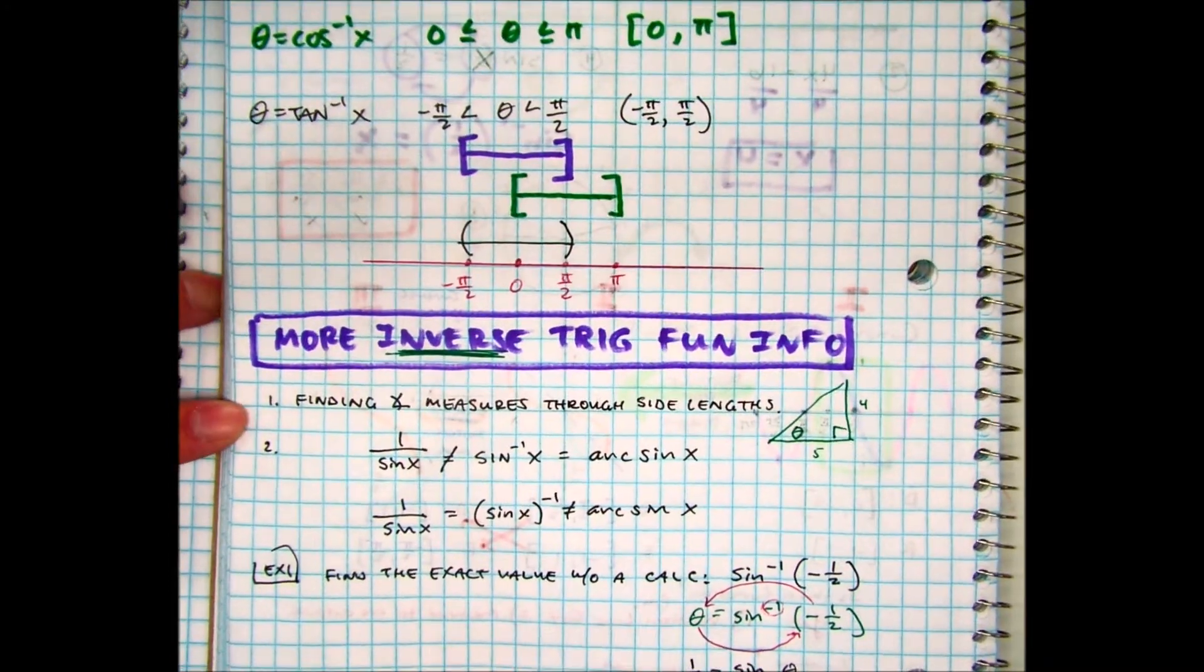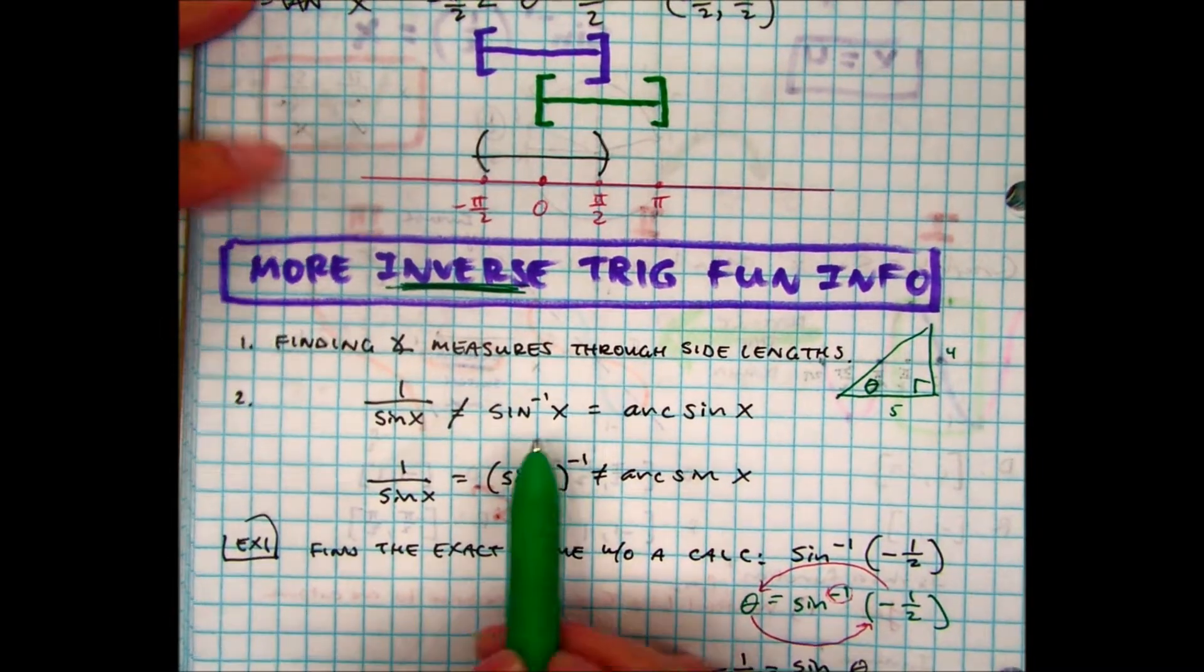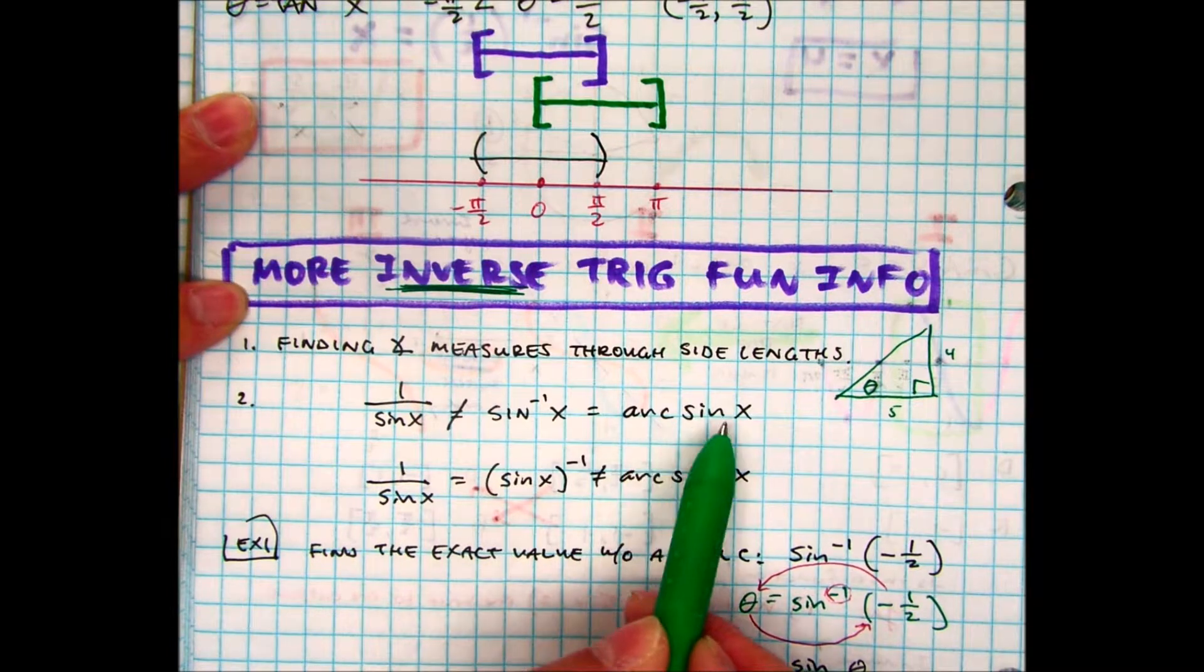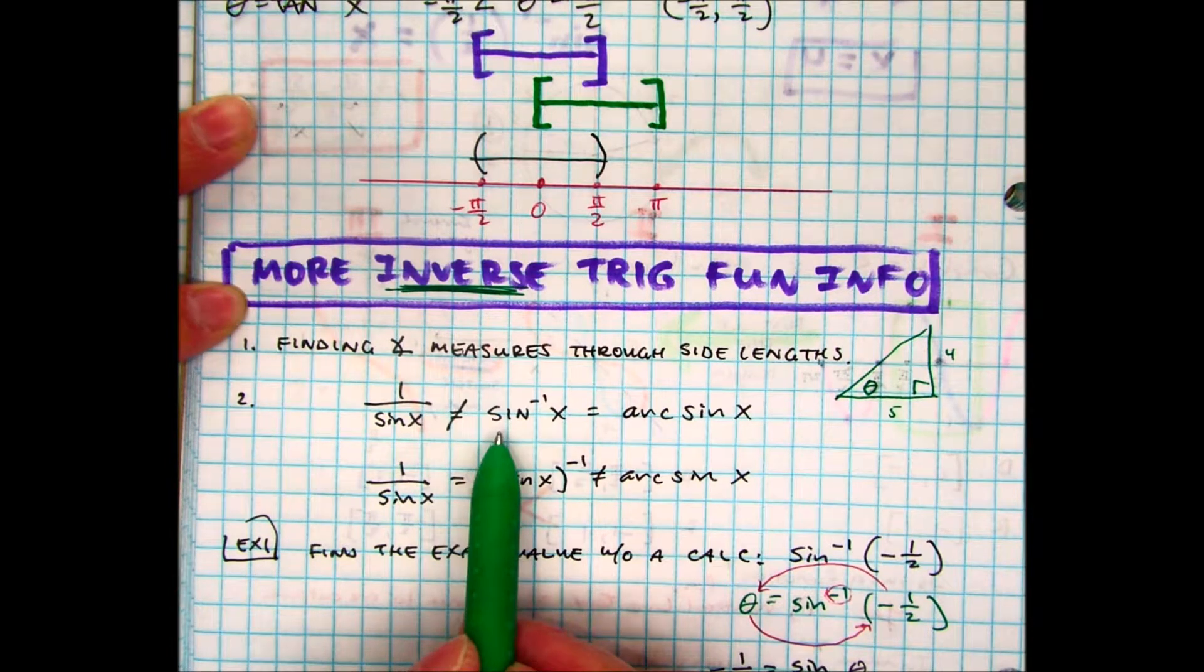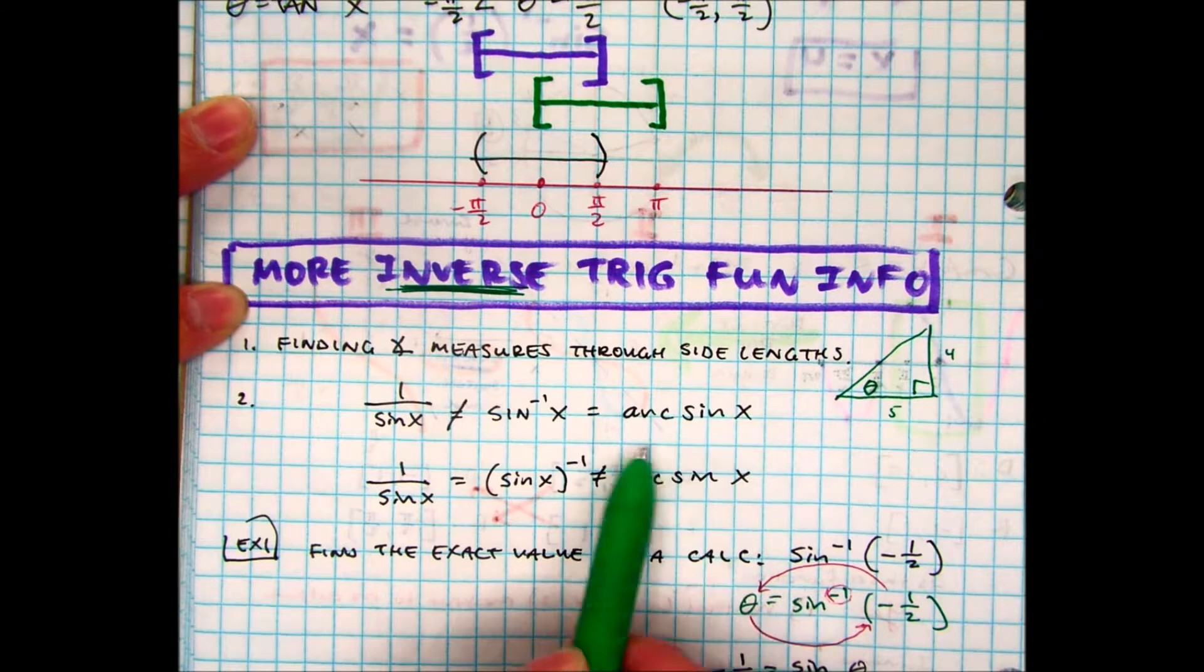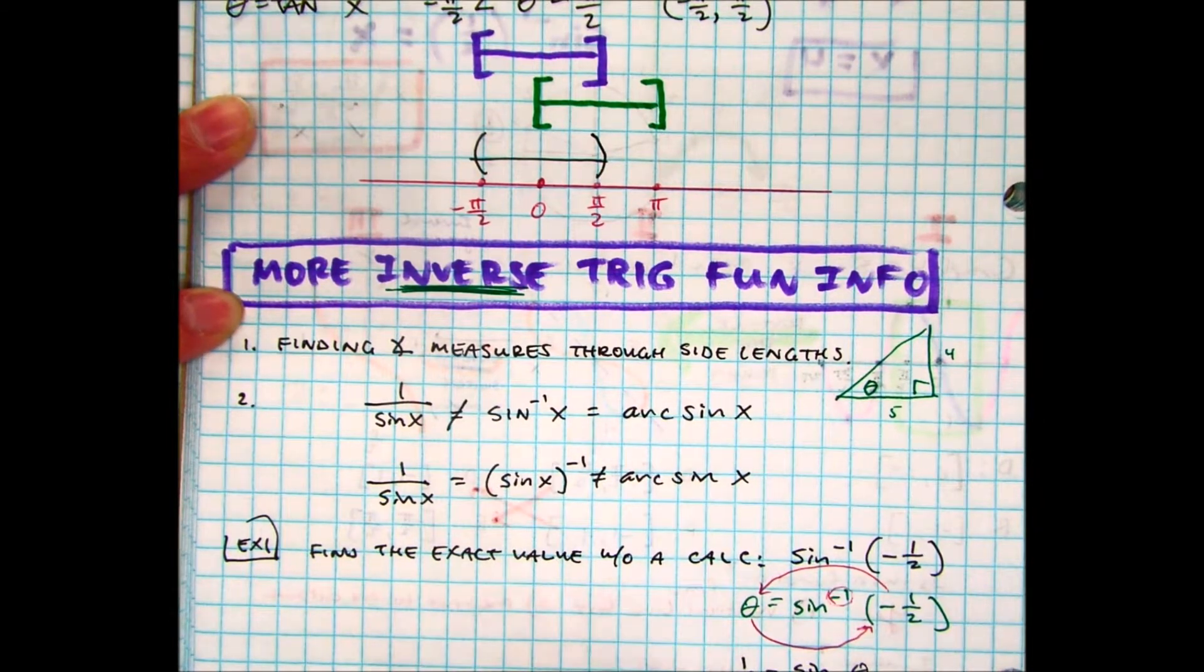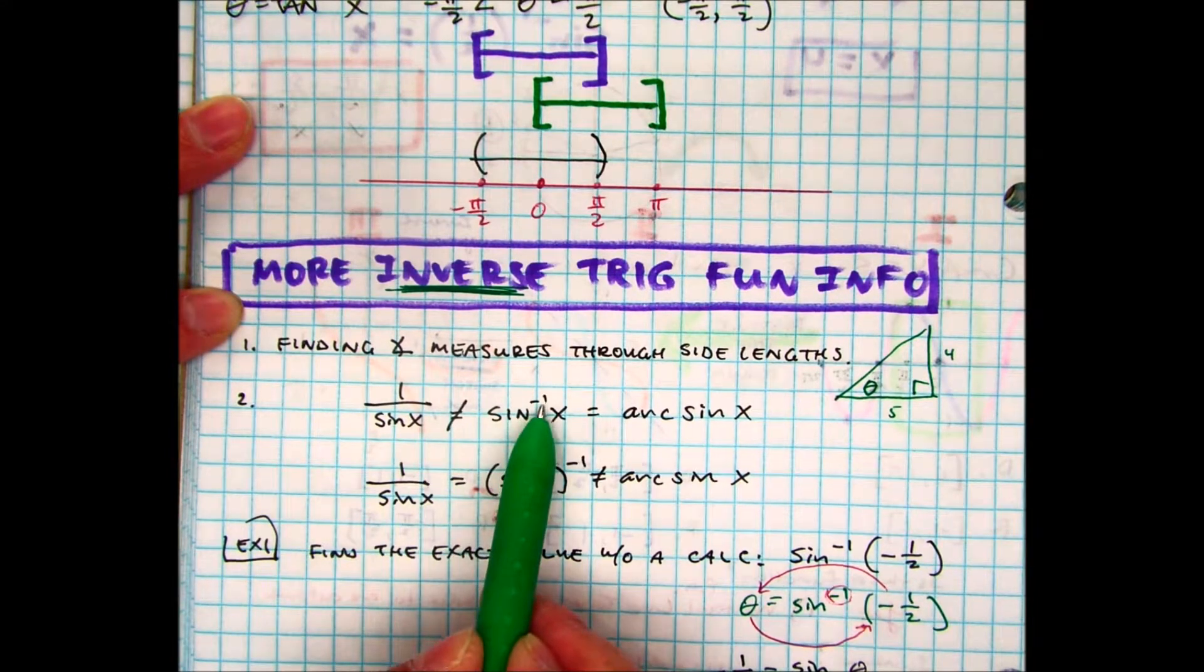Some other information that's new to you is that the inverse of sine is the same thing as arc of sine. What? Everyone say inverse of sine. Inverse of sine. Inverse of sine is the same thing as what? Arc of sine. But notice how there's no negative one. So these are the same. Now, something that you should recognize that's not equal to is this is not a negative exponent.